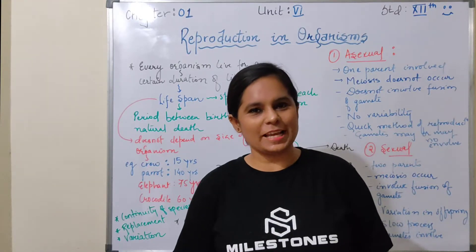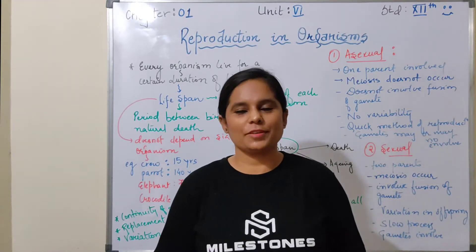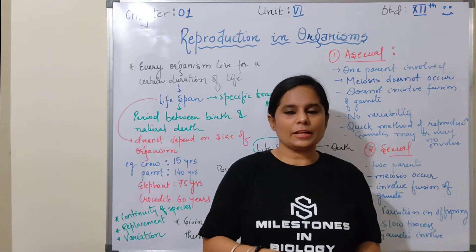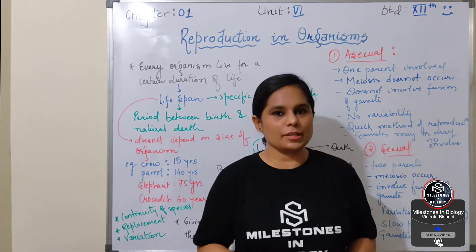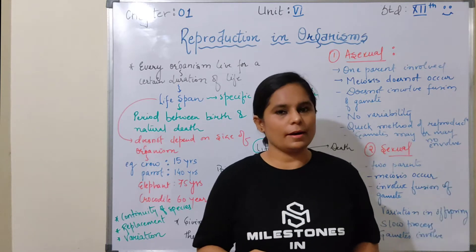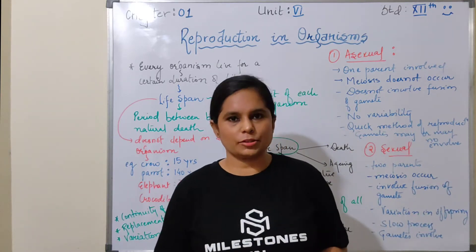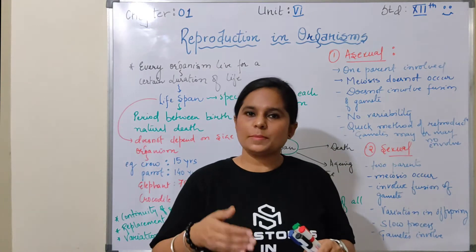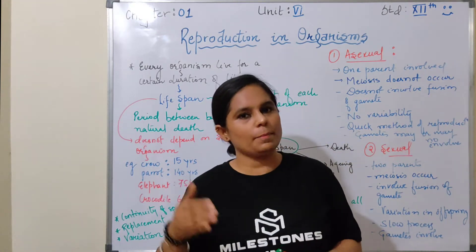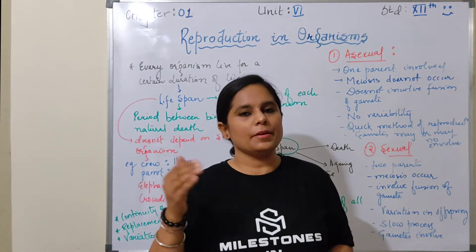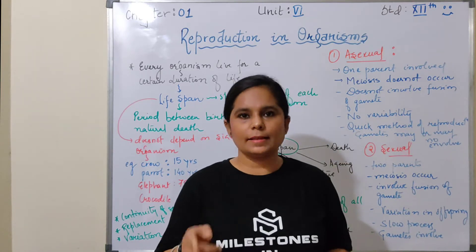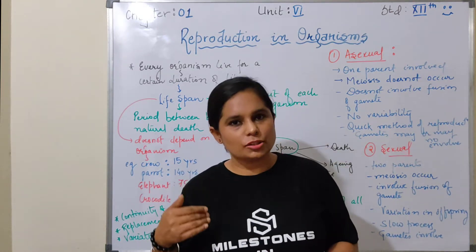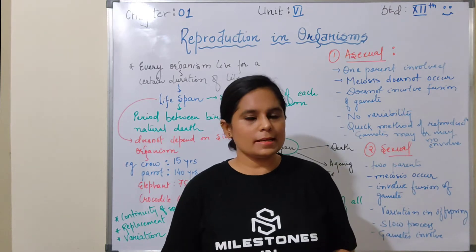Hello everyone, welcome back to my channel. This is Vineetha Bishnoy. Today we are starting with the very first chapter of 12th standard. It is the 6th unit, which is related to reproduction — Reproduction in Organisms. In this unit we cover reproduction in sexual plants, reproduction in humans, and then reproductive health. So these are all four chapters covered in this unit.